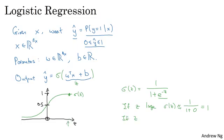Conversely, if z is very small, or if it's a very large negative number, then sigmoid of z becomes 1 over 1 plus e to the negative z, and this becomes e to a huge number. So this becomes, think of it as 1 over 1 plus a number that is very, very big.